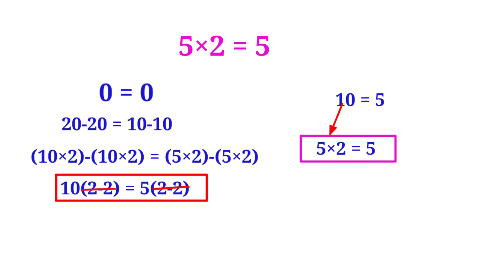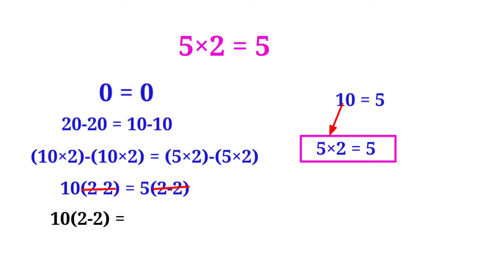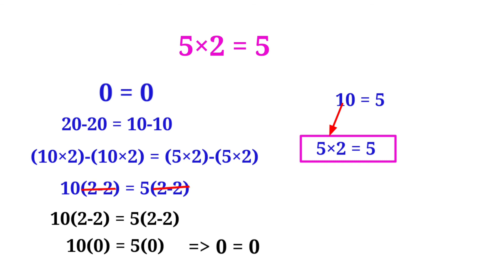See here: 10 into (2 minus 2) is equal to 5 into (2 minus 2). Actually, 2 minus 2 is equal to 0. So we can write this as 10 into 0 is equal to 5 into 0. Therefore 0 is equal to 0. This is the right process — we cannot cancel zero from both sides.